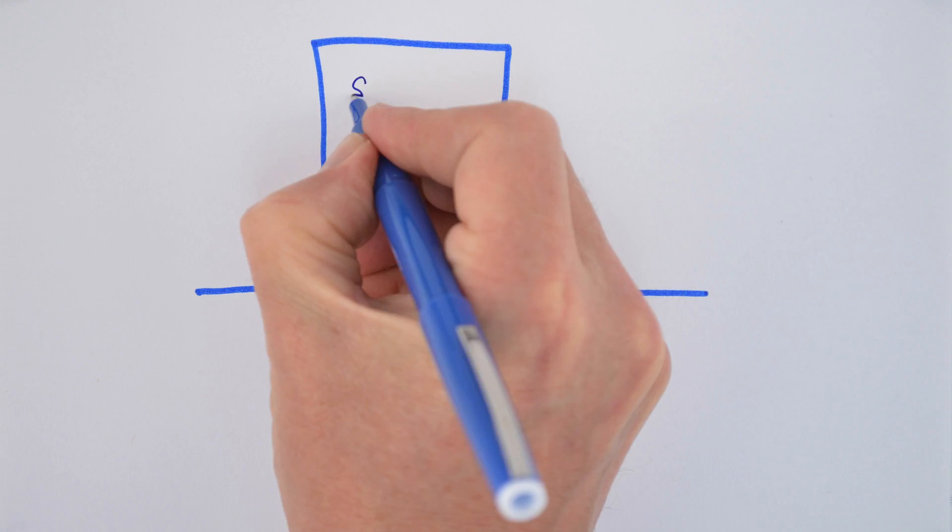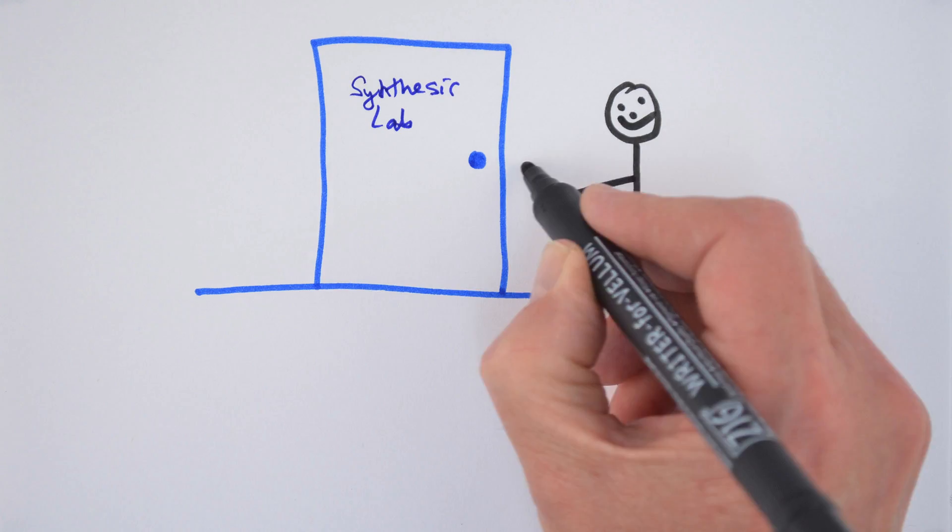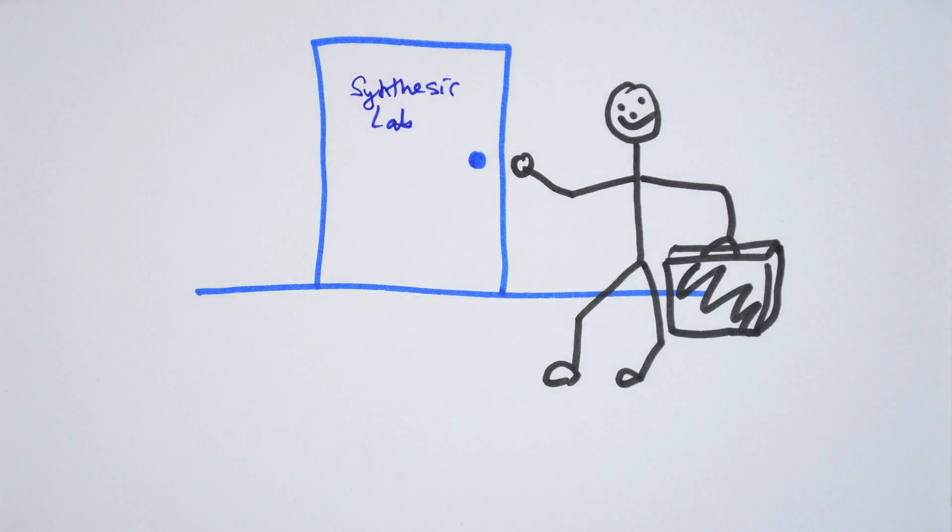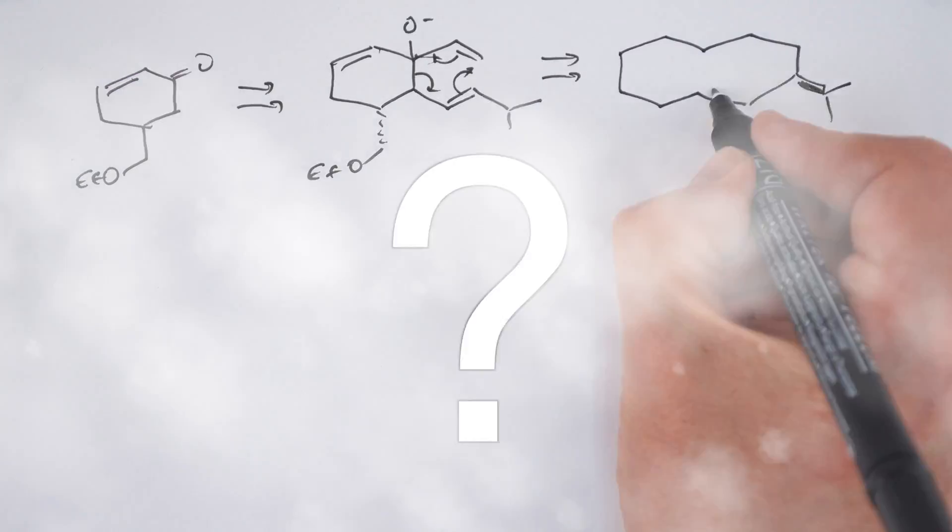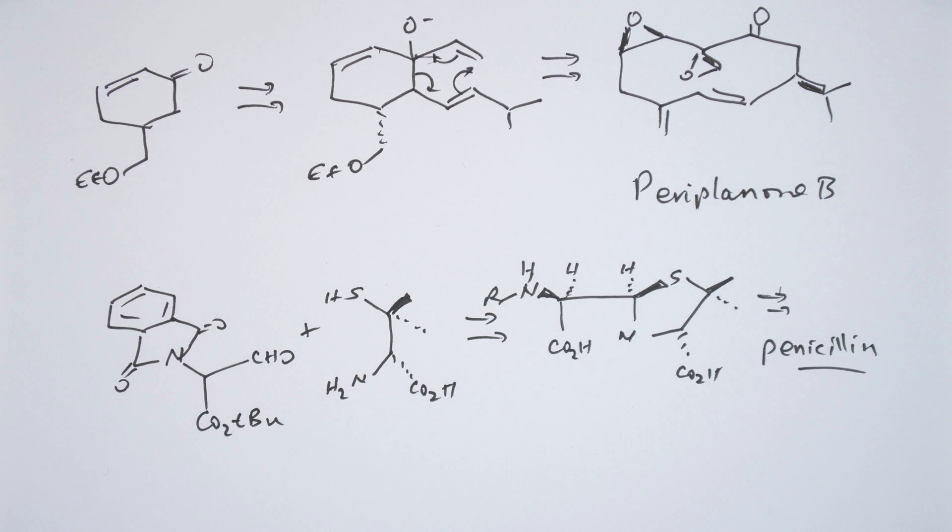Suppose you become really interested in organic synthesis, that part of organic chemistry where chemists go into the lab and synthesize or put together cool molecules with interesting properties. You may ask, how do organic chemists figure out what reaction to use in synthesizing these complicated molecules?